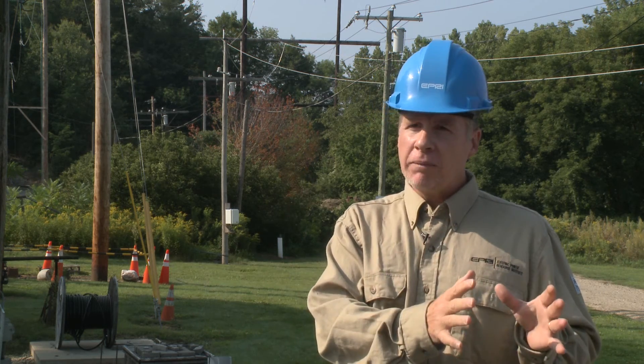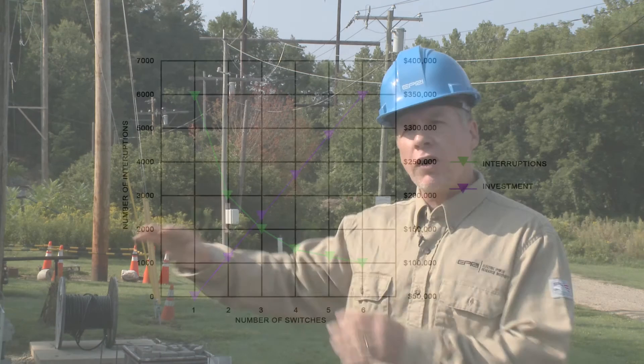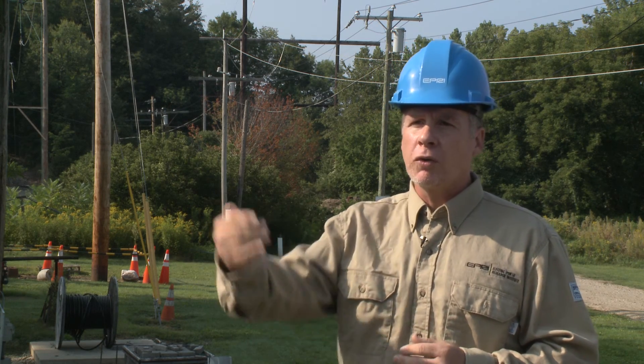The software now enables two processes: one is determining where the switch should be located, but secondly, it also allows the utility to look at each circuit and figure out how many switches should be deployed using the reliability benefits and the investments required. We repeat that iterative process to locate the second switch, then the third. We can calculate the dollar investment per reliability benefit, and at some point those benefits level off — a point of diminishing returns — which clearly shows where the utility should stop deploying.